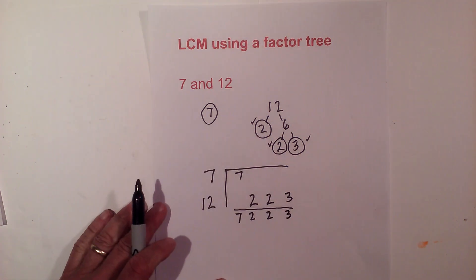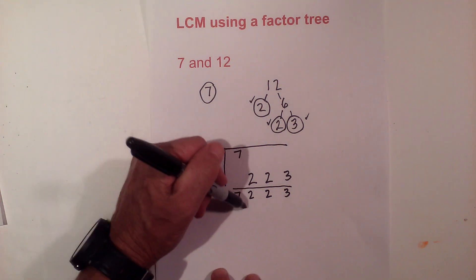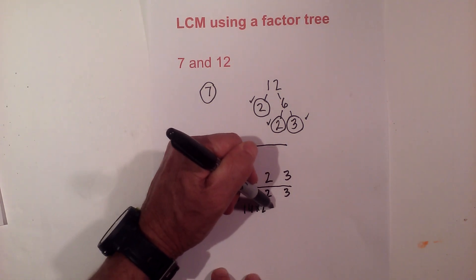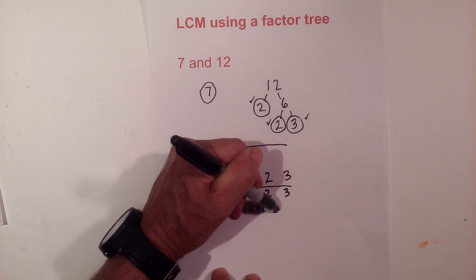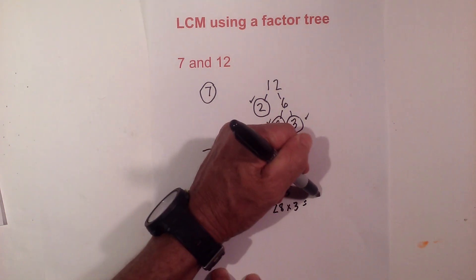7 times 2 is 14, times 2 again is 28, and then 28 times 3 equals 84. So the LCM of 7 and 12 is 84.